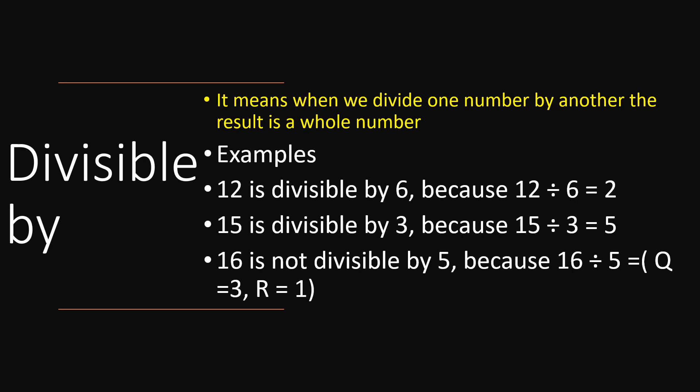15 is divisible by 3 because 15 divided by 3 equals 5 — no remainder. But 16 is not divisible by 5, because when we divide 16 by 5, the quotient is 3 but the remainder is 1. That's why 16 is not divisible by 5.